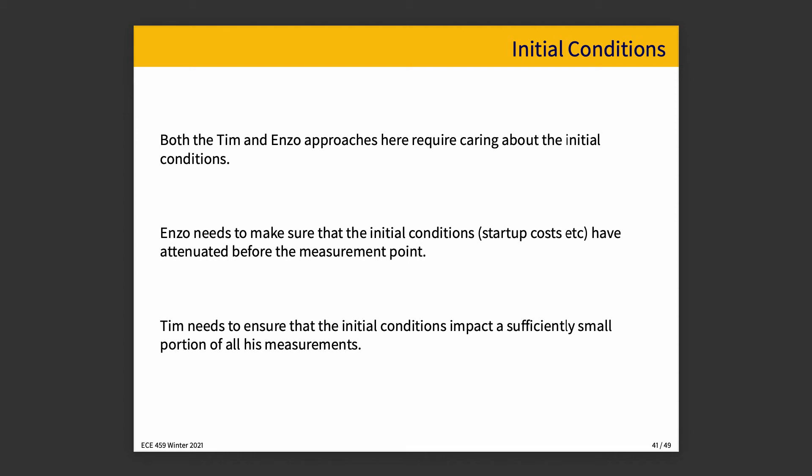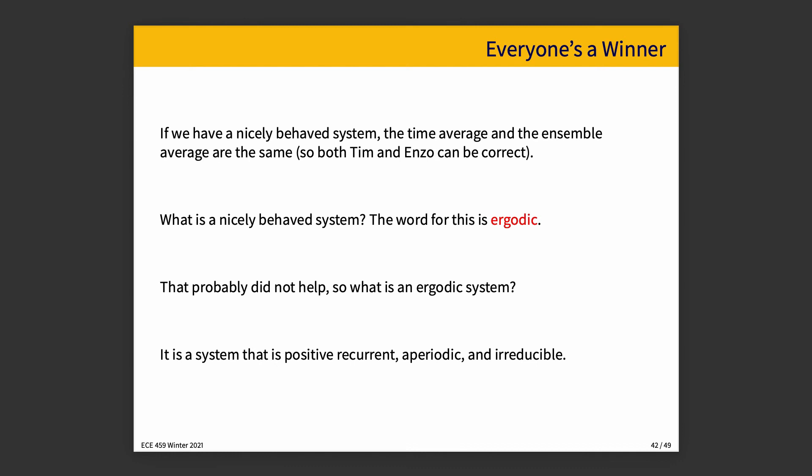Assuming that both Tim and Enzo are doing that — who did it right? Well, the answer is everyone's a winner, potentially. If we have a nicely behaved system, then the time and the ensemble average are the same, in which case both of them are correct and everybody's happy. Nobody did it wrong. What is a nicely behaved system? It's that word that was up at the top at the beginning of the lecture title: Ergodic. I used a fancy word, but what does it mean?